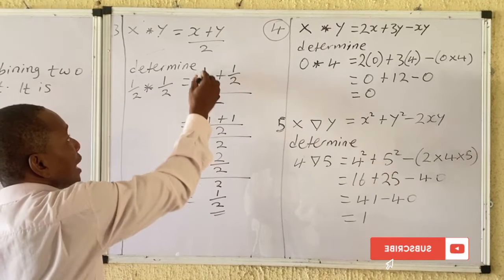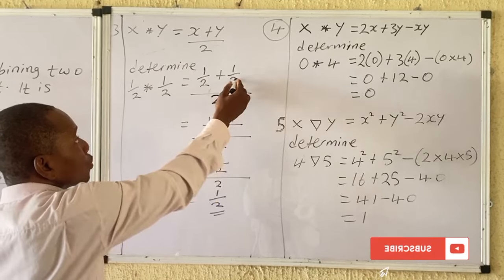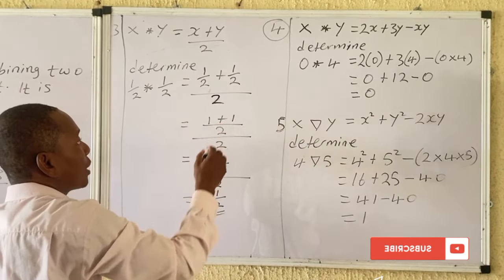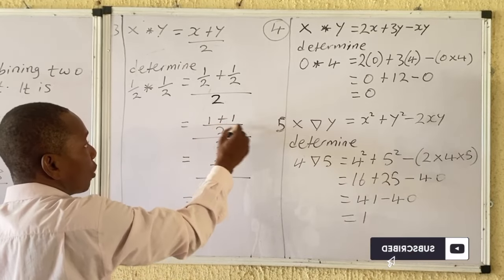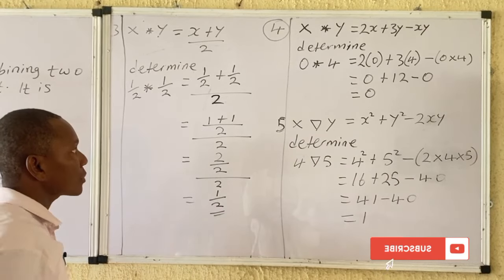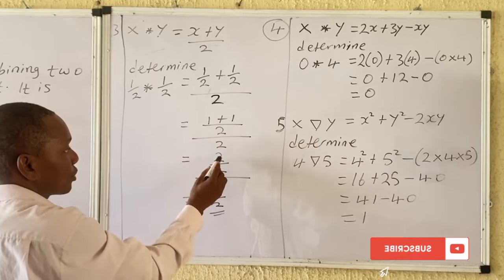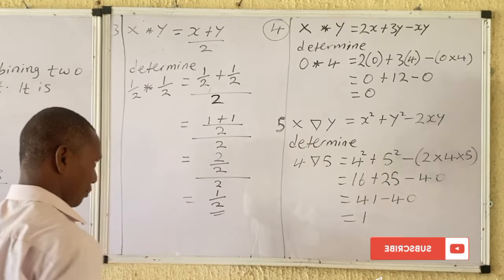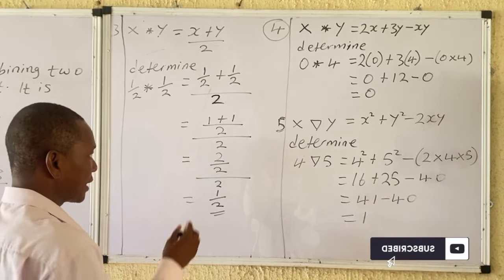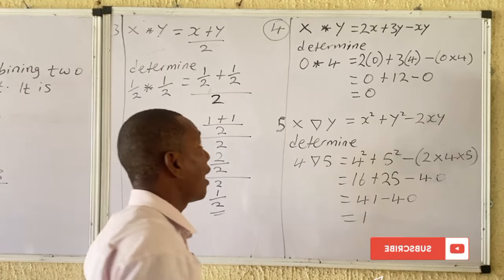So the numerator becomes 2/2, which equals 1. We now have 1 all over 2. Dividing 1 by 2 gives the final answer of 1/2.